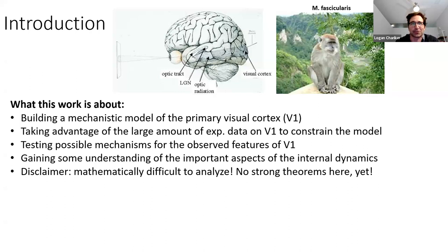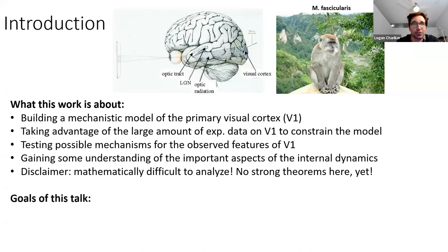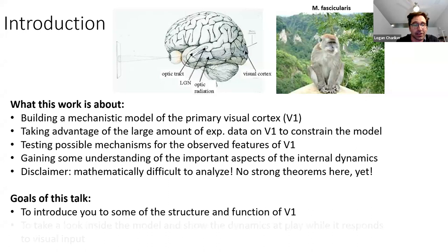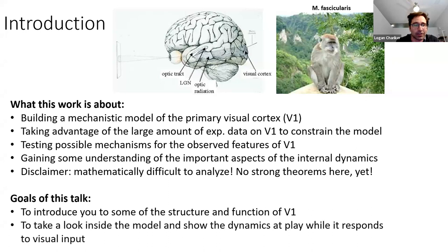We want to use this model to test ideas for how various visual functions arise, and we would like to gain some understanding of the important aspects of the internal dynamics that are at play in visual functions. I have to add the disclaimer that the system is mathematically very difficult to analyze, so this is more computational work, although we are trying to approach it as systematically as we can. There are no strong theorems yet about this system, but hopefully it's something that theorists will find interesting to tackle.